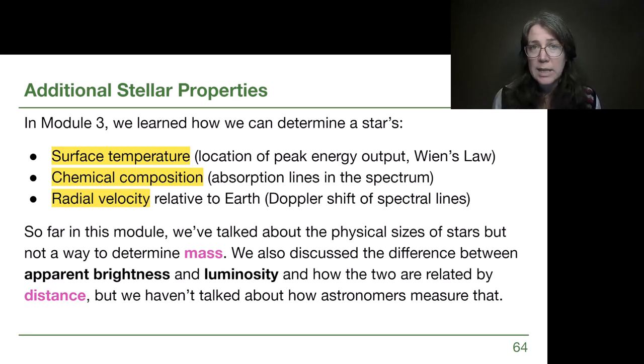And then finally one of the big things at the end of Chapter 5 in Module 3 was to talk about the fact that we could determine a star's radial velocity, how quickly it's moving towards us or away from us, using the Doppler shift. So these are big ideas, but they have not helped us identify a star's mass. And we have talked about the difference between how bright something appears to be and luminosity. We've even discussed the inverse square law where distance is relevant, but we've not talked about how astronomers measure distances. Those are the two goals of this video.